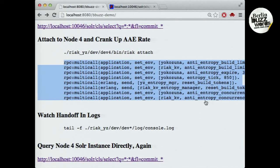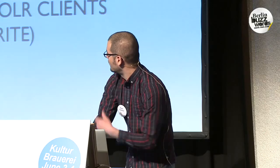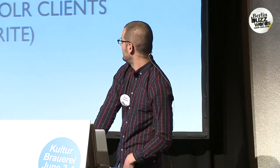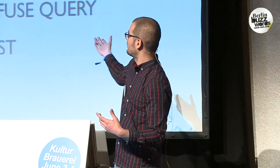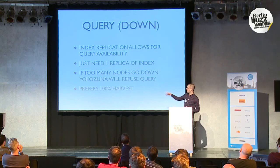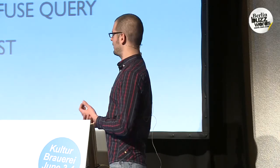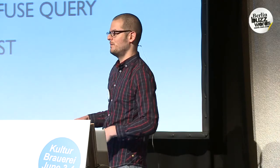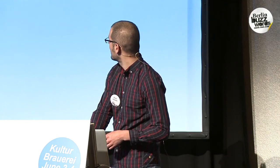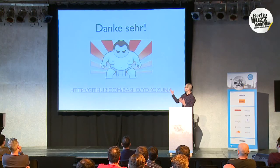As already shown: you can query from any node, use Solar syntax, results return verbatim, and you can use existing Solar clients. Index replication allows for query availability — that's why I could run queries when nodes were down; you just need one replica to survive. If too many nodes go down, though, Yokozuna will refuse to query because right now it prefers 100% harvest over yield — I figured people would rather their search results be consistent than incomplete. But that could be changed in the future to allow you to tune it like we do with normal React. And that's it — thank you.